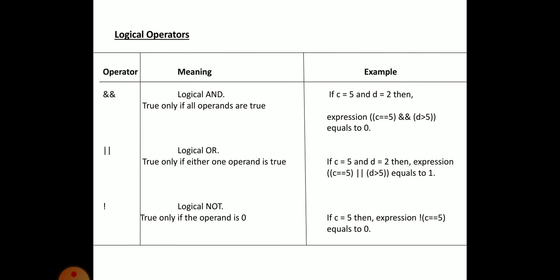Next are logical operators. In addition to relational operators, C also supports three logical operators: logical AND (&&), logical OR (||), and logical NOT (!). The logical AND and OR operators are used when we want to test more than one condition and make decisions. When we want to compare more than one condition, we make use of the logical AND, OR, or NOT operators.